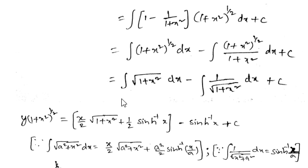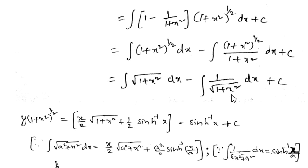For ∫1/√(1 + x²) dx, the answer is sinh⁻¹(x), comparing with the formula ∫1/√(x² + a²) dx = sinh⁻¹(x/a). Here a = 1, so sinh⁻¹(x/1) = sinh⁻¹(x), plus c.